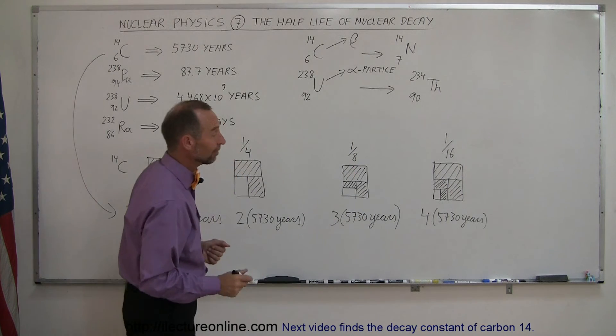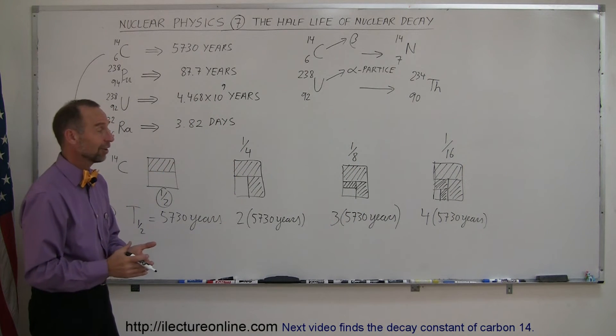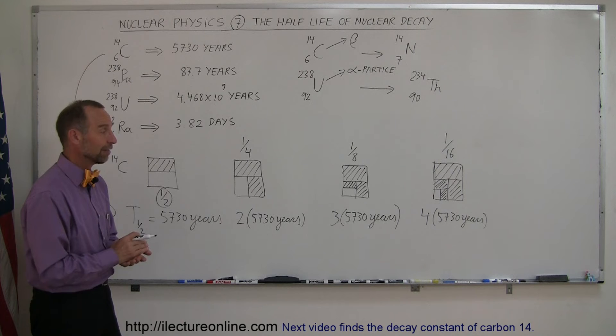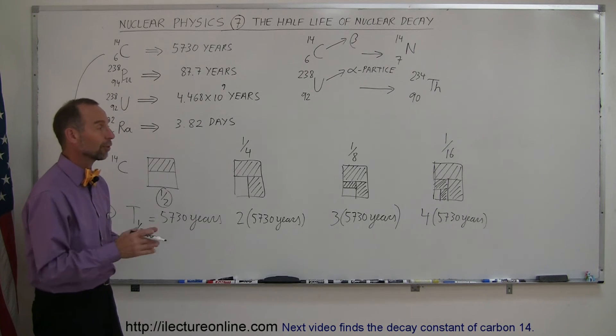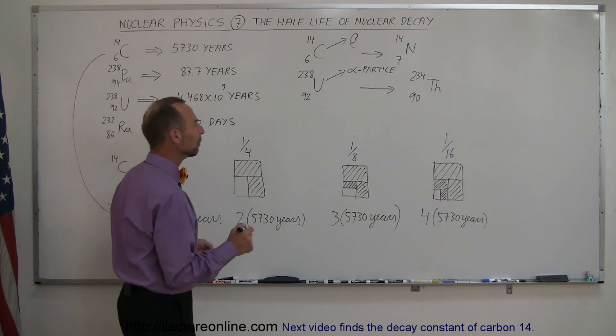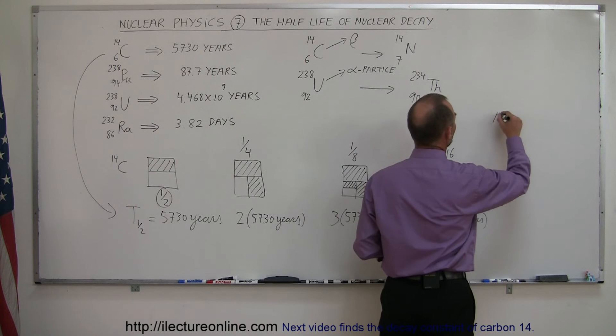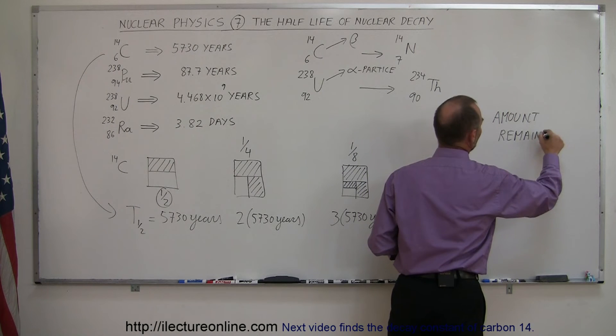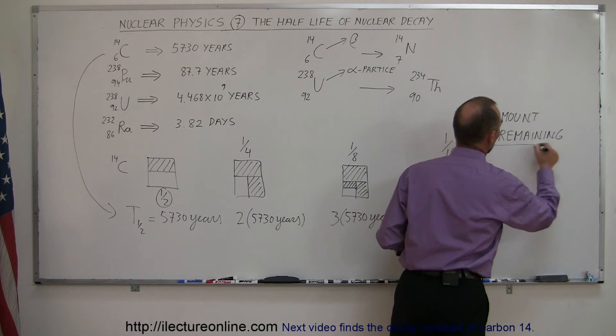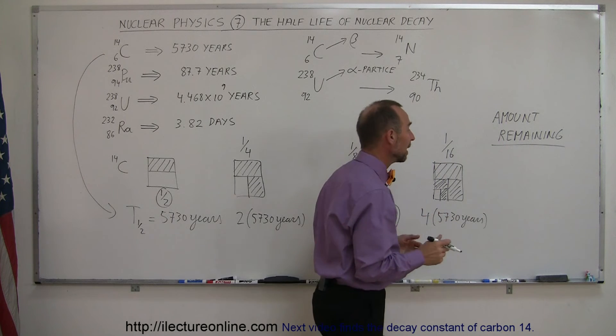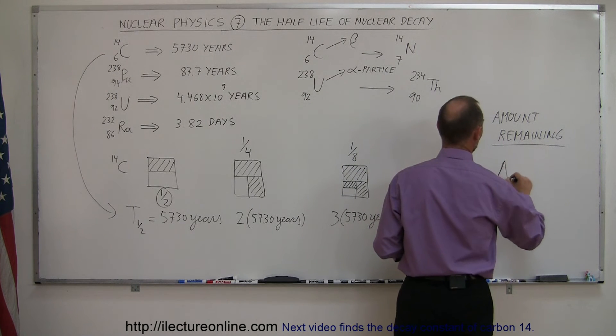And now you can see the pattern. Of course, after five half-lives, you only have one-thirty-second of it left. After six half-lives, one-sixty-fourth, and so forth. So the amount remaining, one way to think about it, the amount remaining, and we talk about the radioactive portion of the sample, the amount remaining, let's call it A...